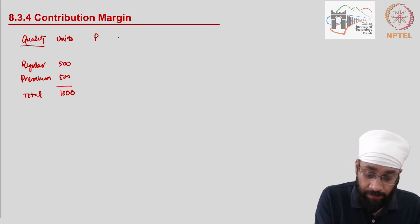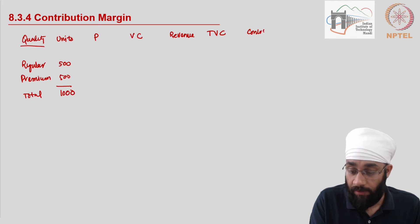We have to figure out the price per unit, the variable cost per unit, and then we can figure out the revenue and the total variable cost. And then the contribution can be figured out.